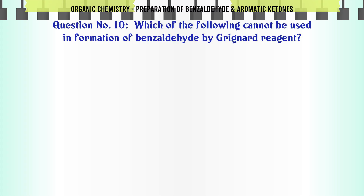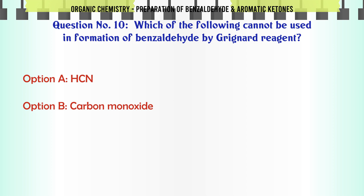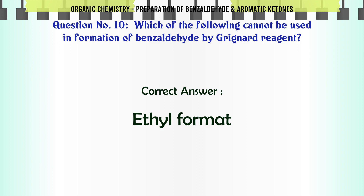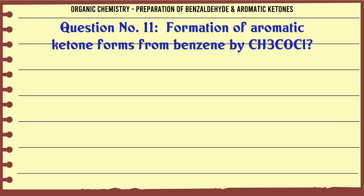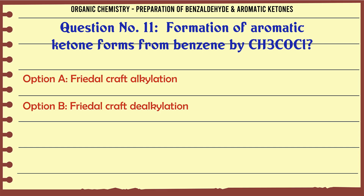Which of the following cannot be used in the formation of benzaldehyde by Grignard reagent? A. HCN. B. Carbon monoxide. C. Ethyl formate. D. HNC. The correct answer is Ethyl formate.